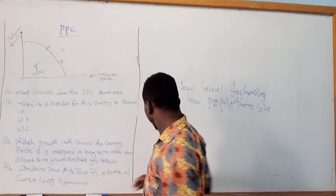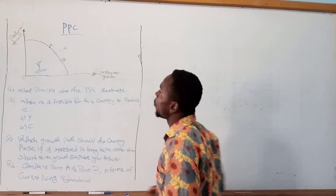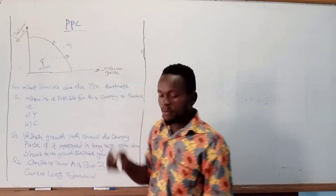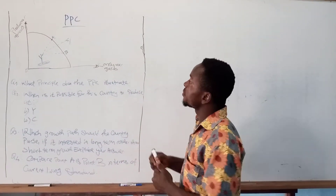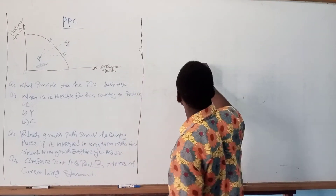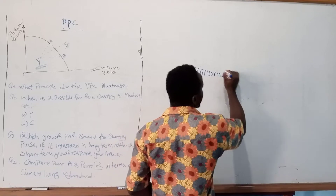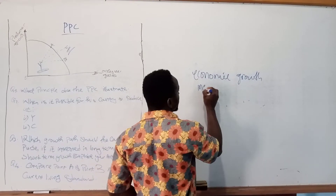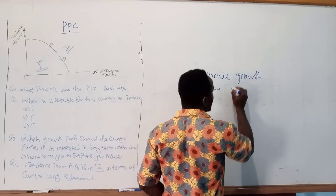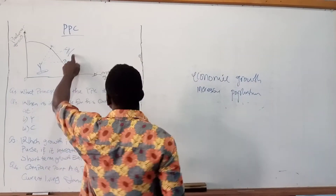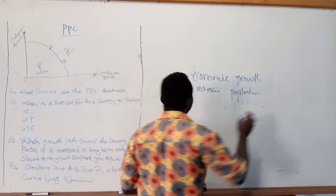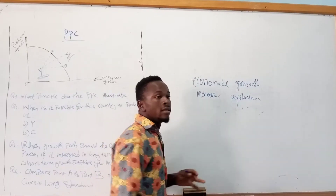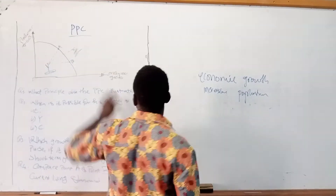The question also asks when a country would be producing at Point C, which is outside the PPC. It is only possible for the country to be producing at Point C when there is economic growth, when there is an increase in population size, when there is full utilization of economic resources, or when the standard of living is high.